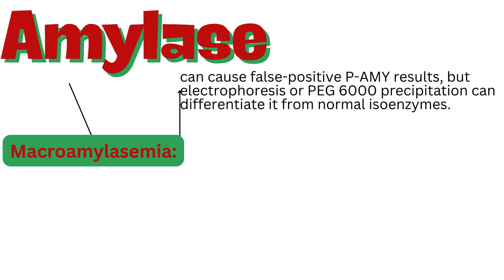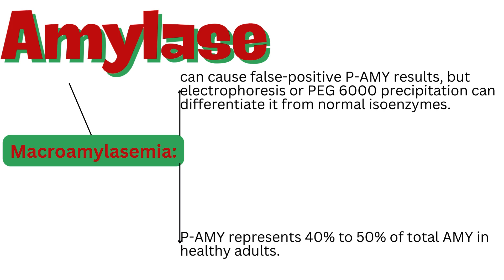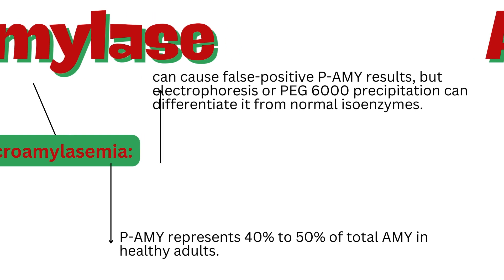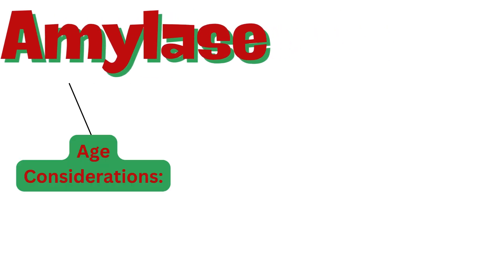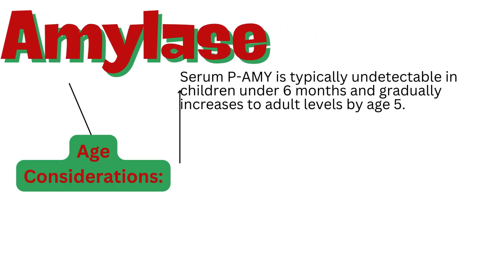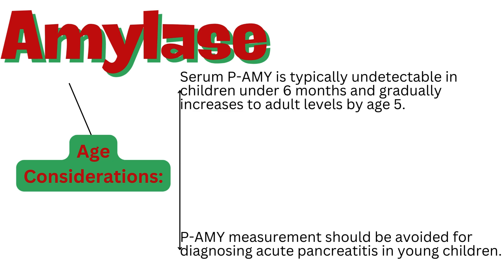Macroamylasemia can cause false positive PAMY results, but electrophoresis or PEG-6000 precipitation can differentiate it from normal isoenzymes. PAMY represents 40% to 50% of total AMY in healthy adults. Serum PAMY is typically undetectable in children under 6 months and gradually increases to adult levels by age 5. PAMY measurement should be avoided for diagnosing acute pancreatitis in young children.